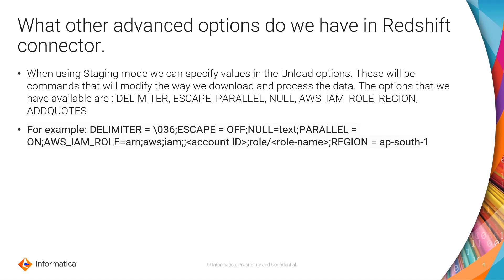As mentioned before, we have other settings that we can apply and these ones are available when you are using Staging mode. These settings will help you to deal with some characteristics about your data or also the behavior of how you download the data. For example, we have one option called Parallel and this will help you to get the best performance. When you bring the data from S3 into your staging files, all that data will be divided into different blocks and you will download all those blocks in parallel. This is what gives you the performance advantage over not using Parallel or when you are using Direct mode.